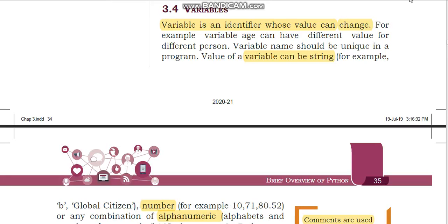Om Namah Shivaya children. In the previous video, we had learnt what is identifier. Now today we will start with variables. Now variable is also an identifier. Identifiers are names that are used to name different kinds of entities used in Python programming.